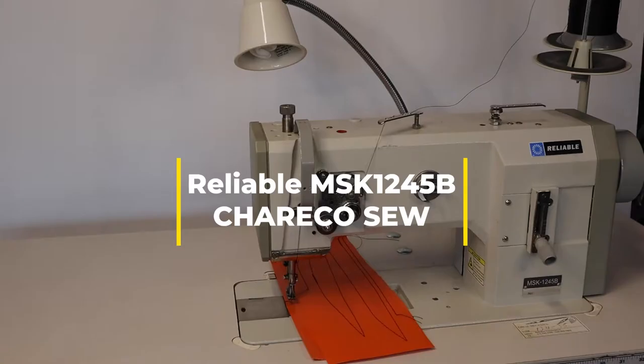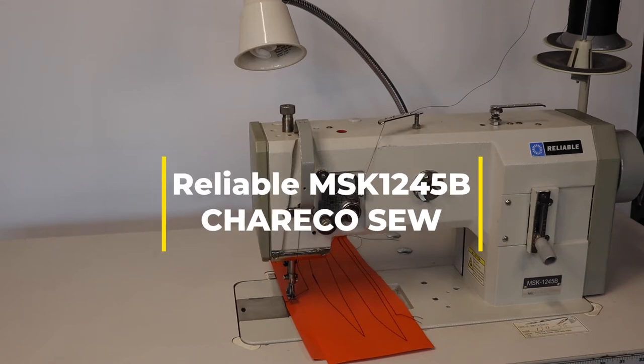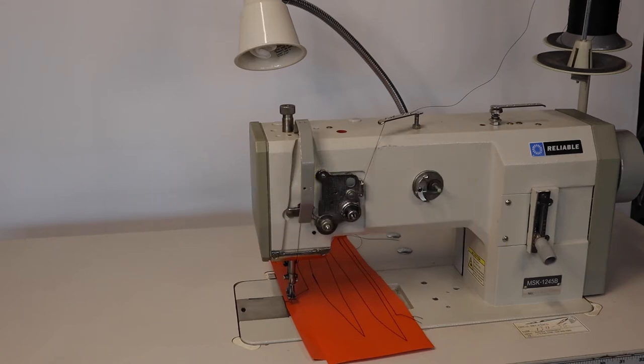Today we're looking at the Reliable MSK 1245B. This is a compound feed walking foot machine. It features an integrated bobbin winder, reverse, and a large capacity hook.